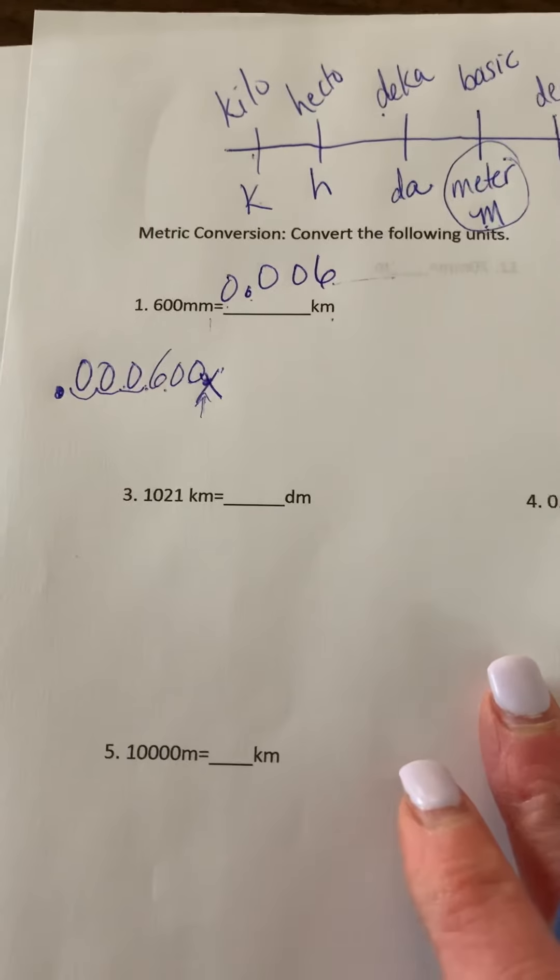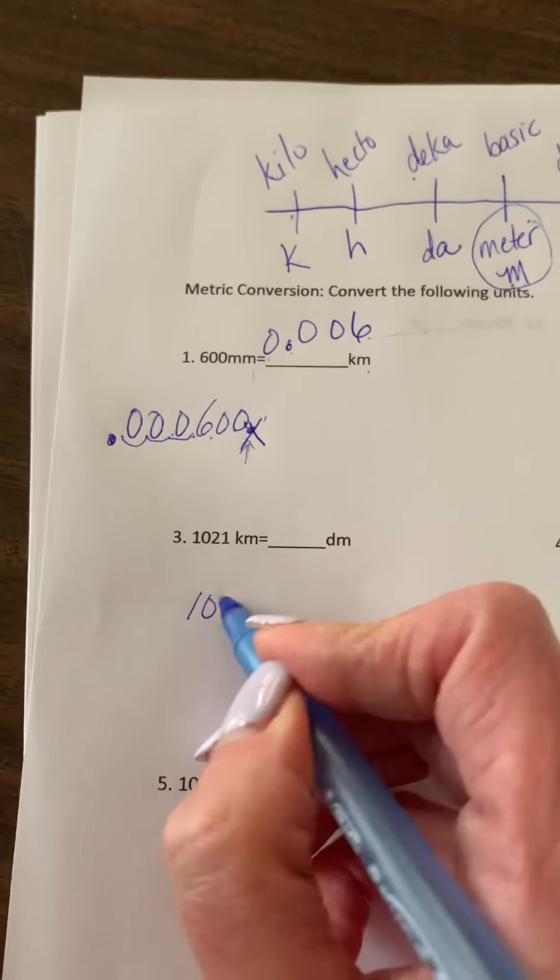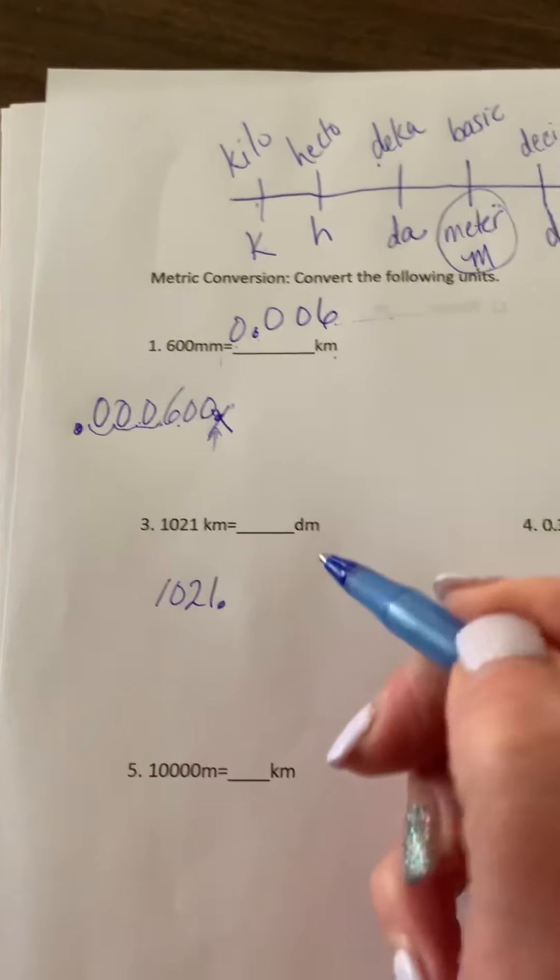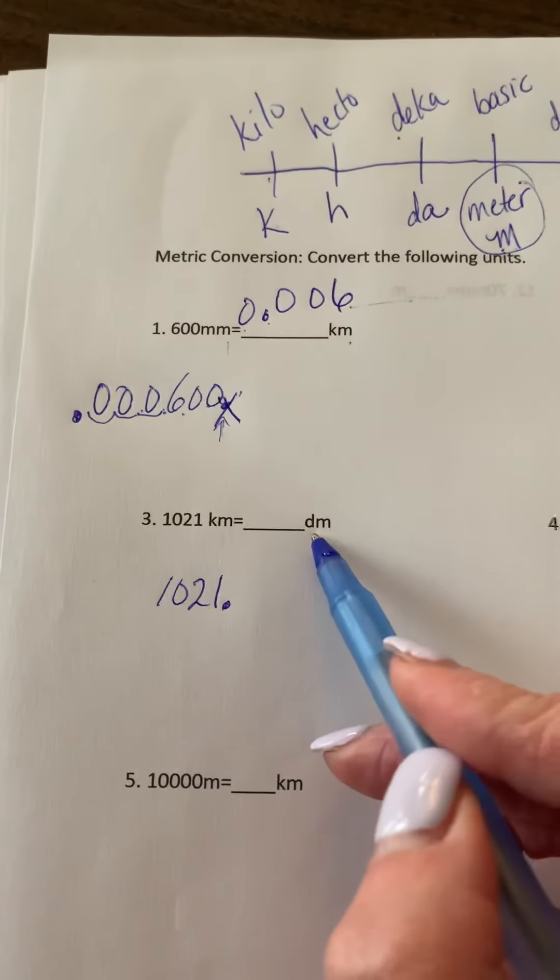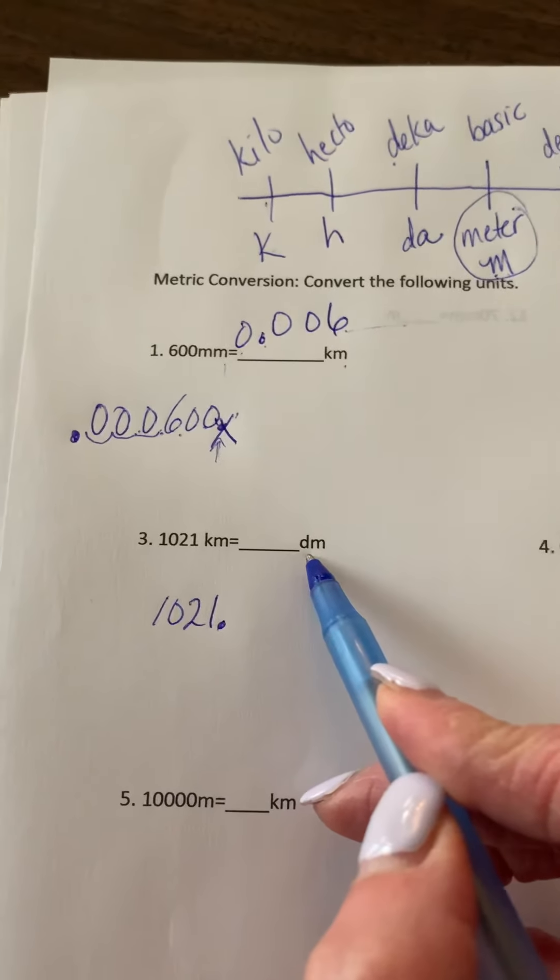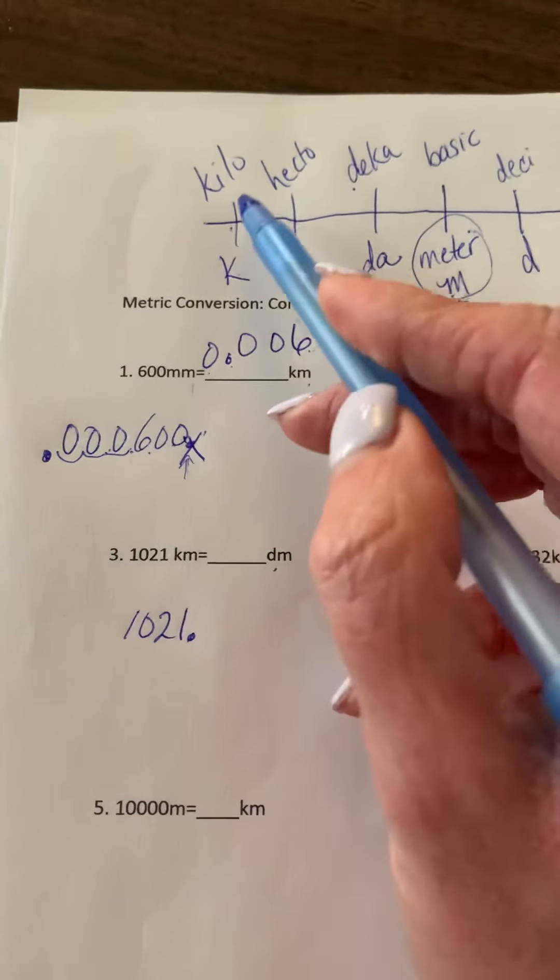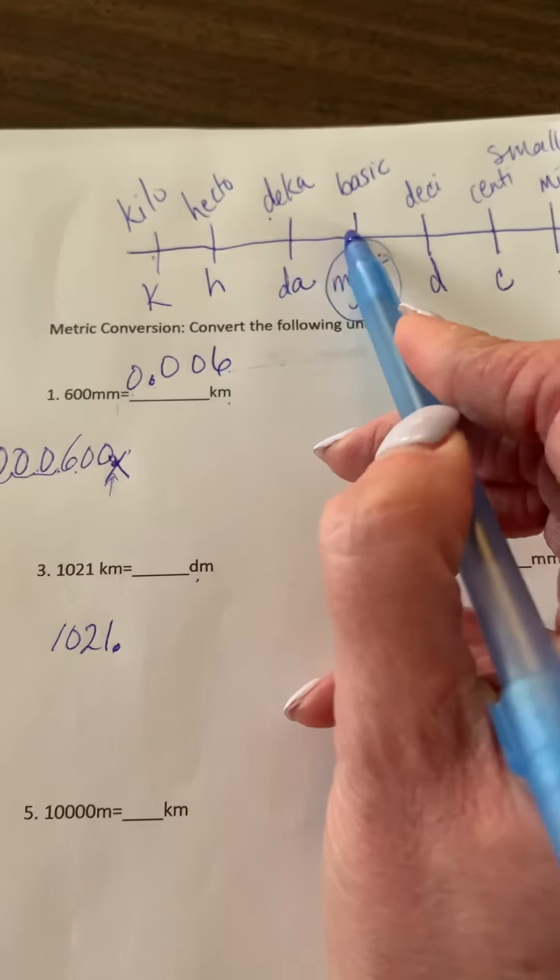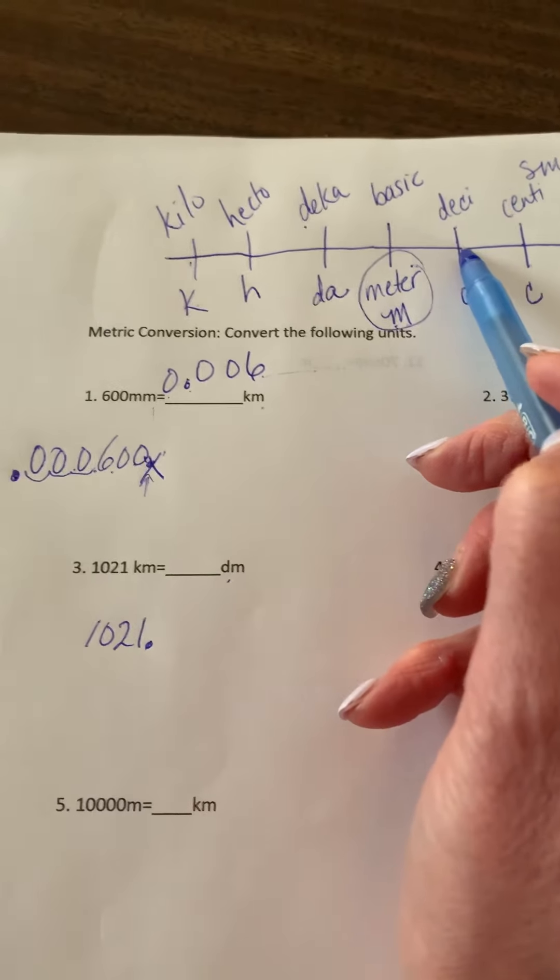Question number three. We've got 1,021 kilometers. There's where our original decimal is. And we're moving to, not decameters, that would be D-A-M, we're moving to decimeters. So from kilometers to decimeters: one, two, three, four. And this time we're moving to the right.